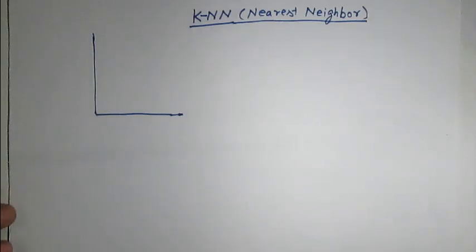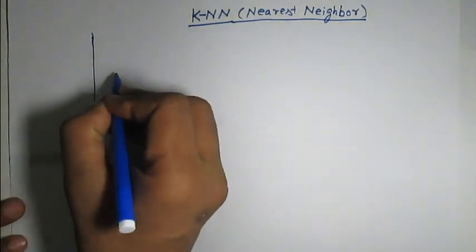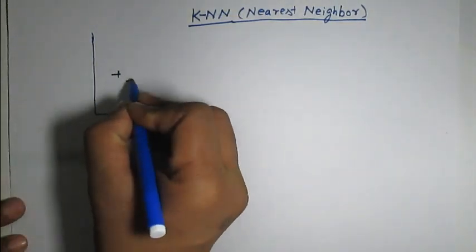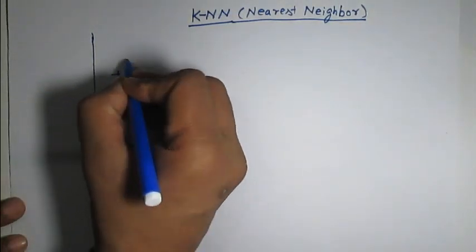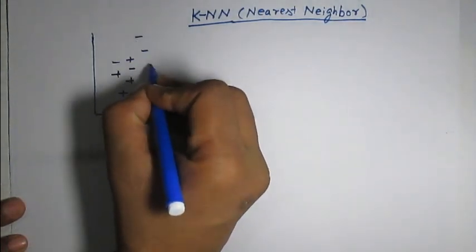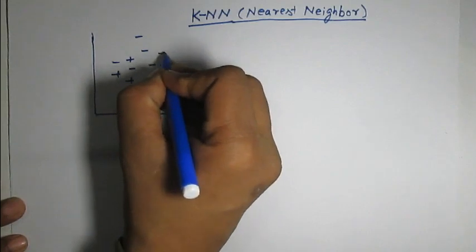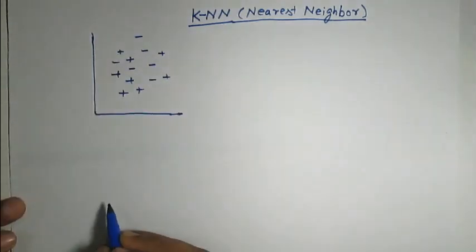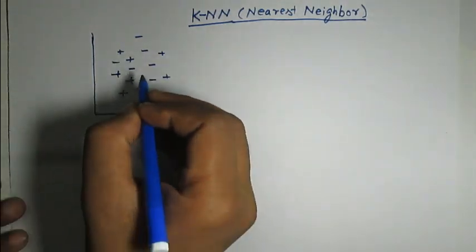K-NN or K-nearest neighbor algorithm classifies an unknown data point according to the label of nearest neighbors. For example, there are data points stored in the database.